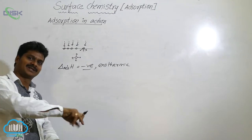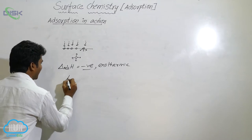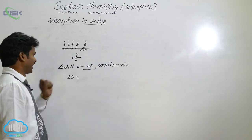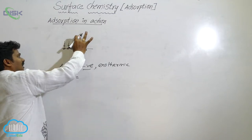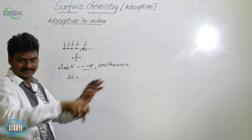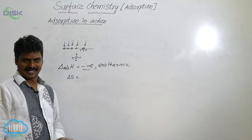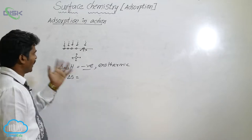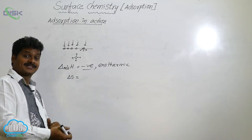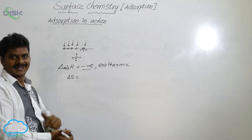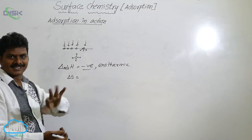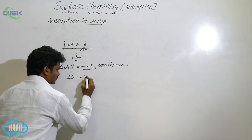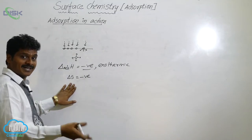Let us see the thermodynamics of adsorption. Delta H we know is negative. What about delta S? The adsorbate molecules are initially very free to move — that means there is more disorder. But once they are adsorbed, their degree of disorder decreases. Decrease in disorder means decrease in entropy, so delta S of adsorption is also negative.